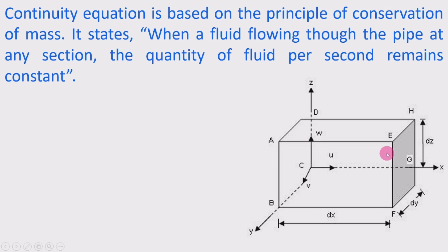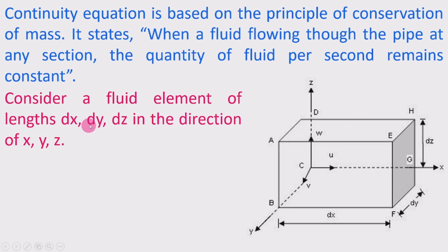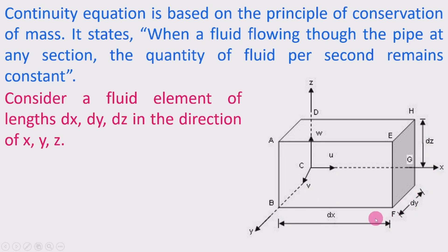The considerations for the three-dimensional continuity equation: we take fluid flow in three directions and consider a three-dimensional fluid flow volume element. Consider a fluid element of length dx, dy, dz in the x, y, and z directions respectively. This is the fluid element having length dx, dy, and dz in the x, y, and z directions.